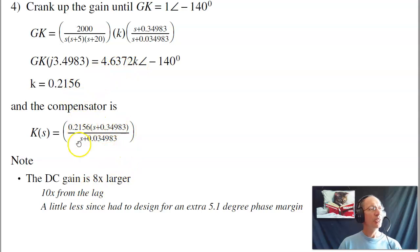So here's my lag compensator. A couple things to note. When I add the lag compensator, the DC gain is 8 times higher than it was with the gain compensator. It should be 10 times higher, but I had to back off on the gain a little bit to give me that extra 5 degree phase margin. So the net result is I improved the DC gain by 8 times.